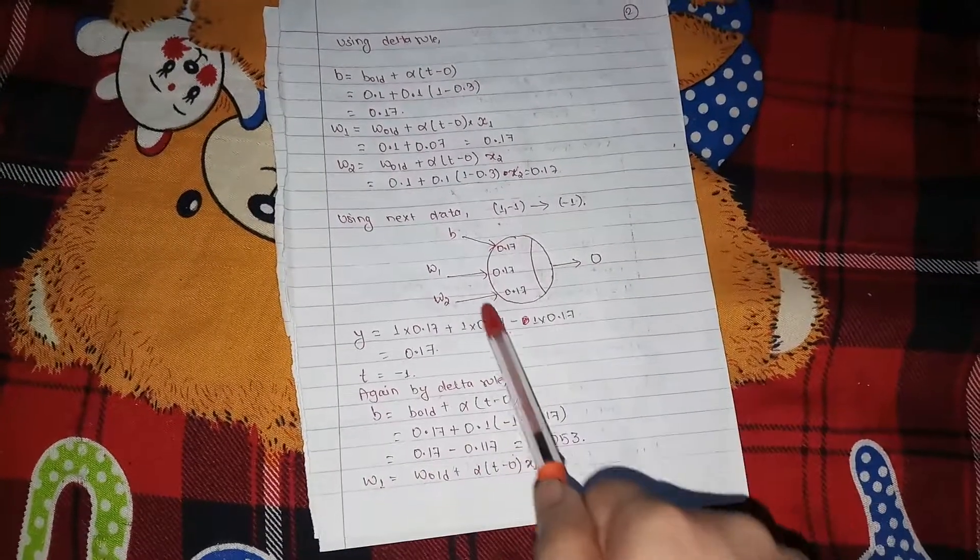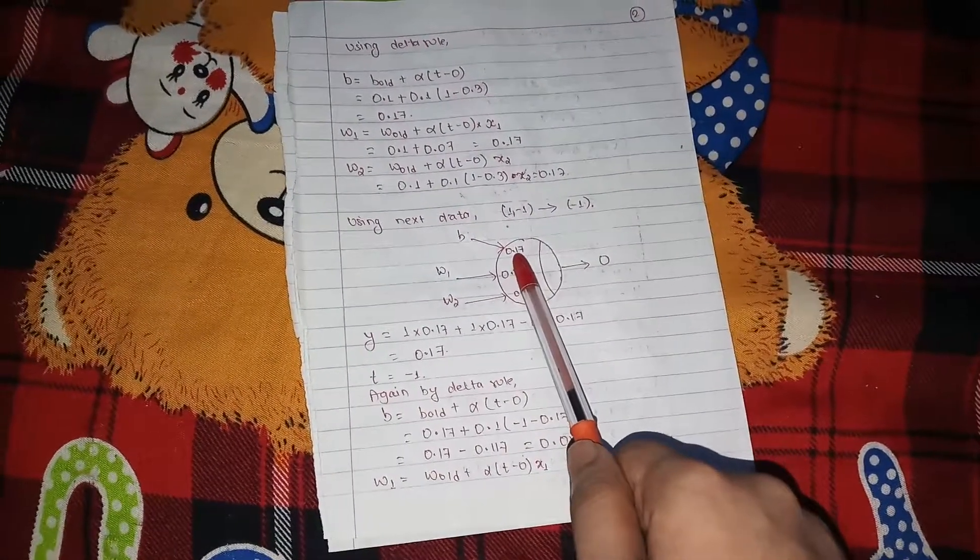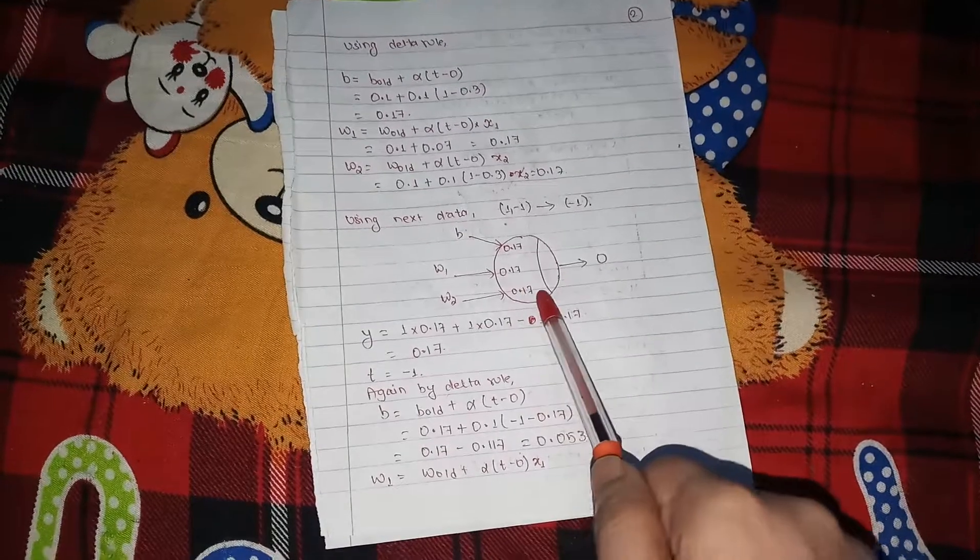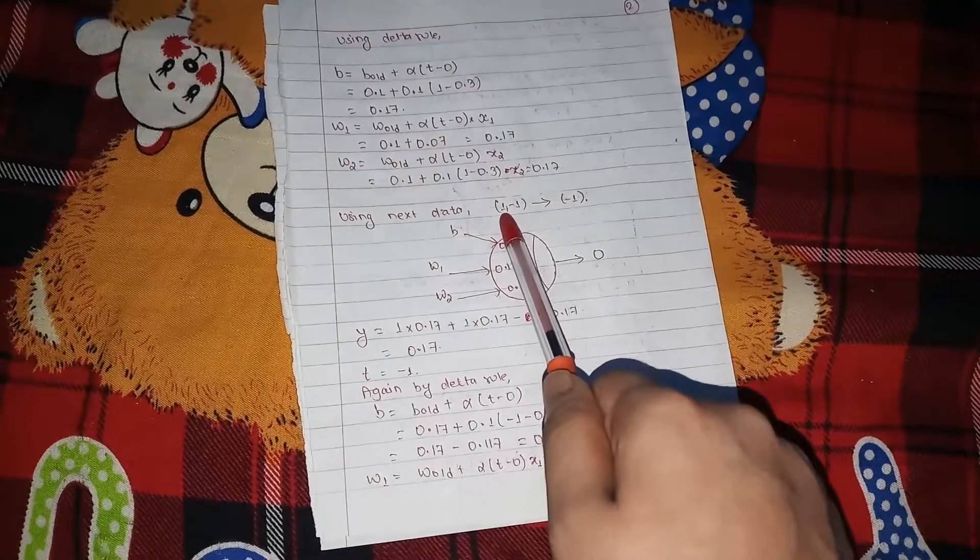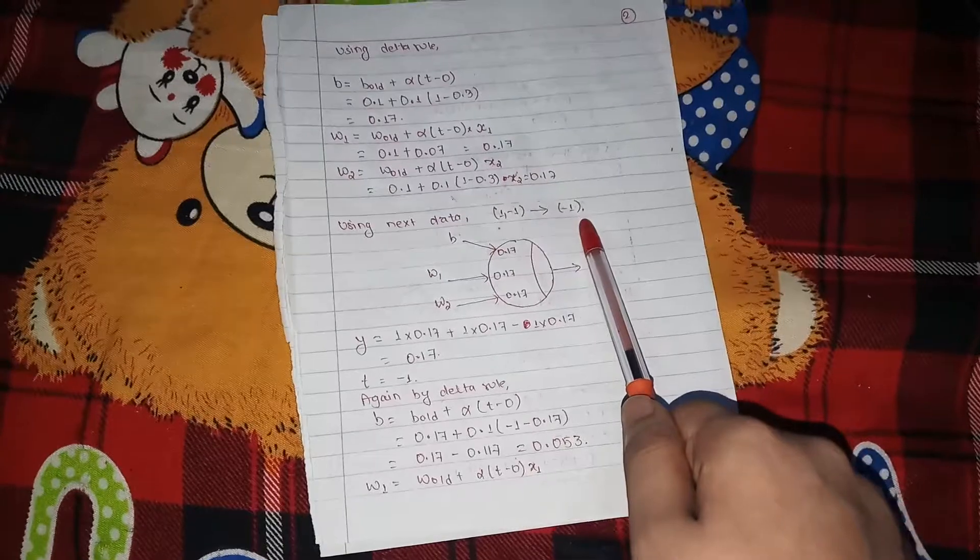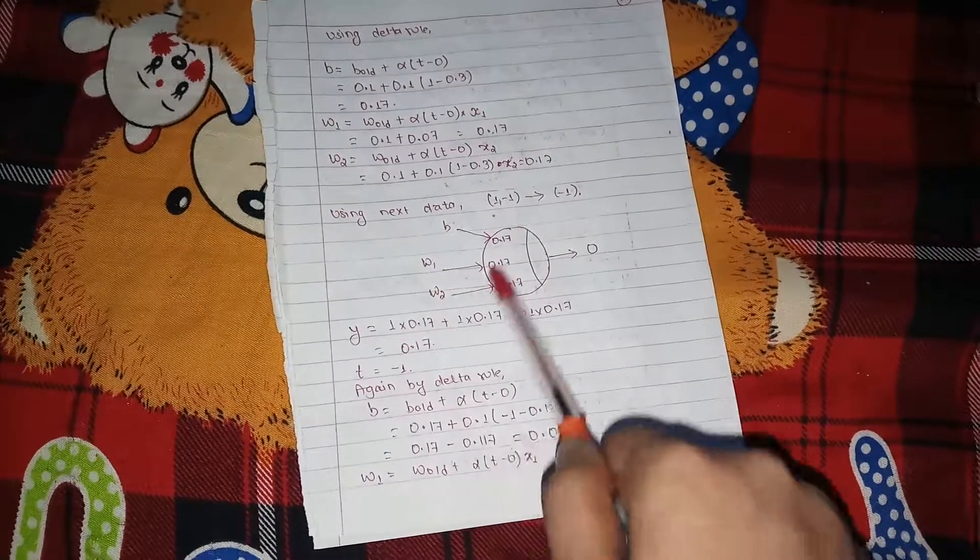Now, we create a new neuron with the new weightage 0.017, 0.117, 0.117. Now the input is 1, comma minus 1, and the output is minus 1. So now we repeat all these processes and obtain the new output.